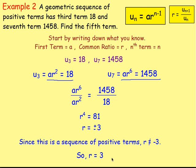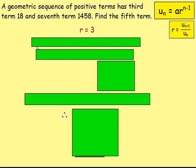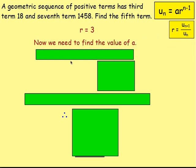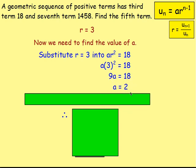So we know r equals 3. Now we need to find a. We can substitute r equals 3 into the equation ar squared equals 18. That gives us a times 3 squared equals 18, so 9a equals 18, and a equals 2.